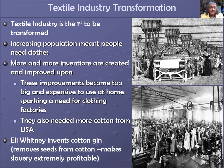At first, textile workers operated the flying shuttle and the spinning jenny by hand. Then Richard Arkwright invented the water frame in 1769, and Samuel Compton combined the features of the spinning jenny and the water frame to produce the spinning mule. The spinning mule made thread that was stronger, finer, and more consistent than earlier spinning machines, and it was run by water power. Edmund Cartwright's power loom sped up weaving after its invention in 1787.